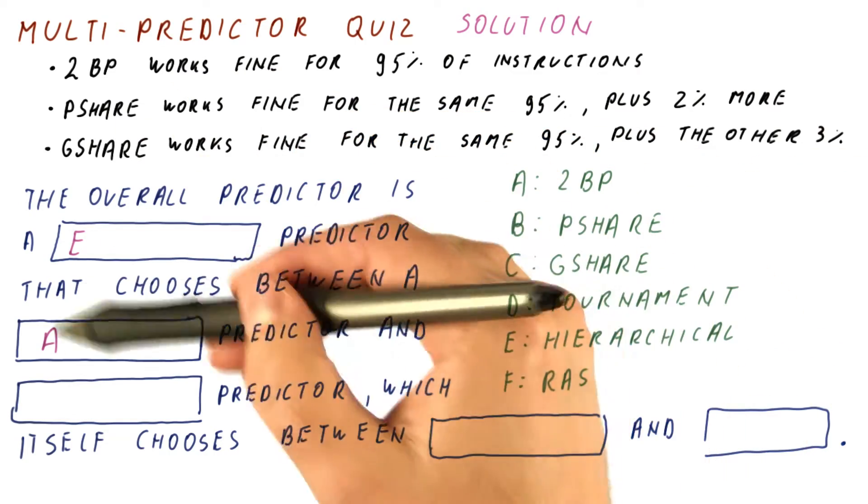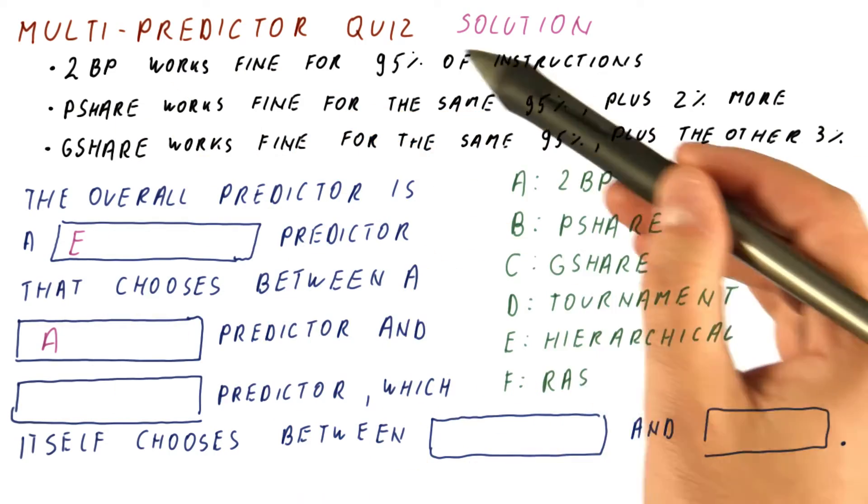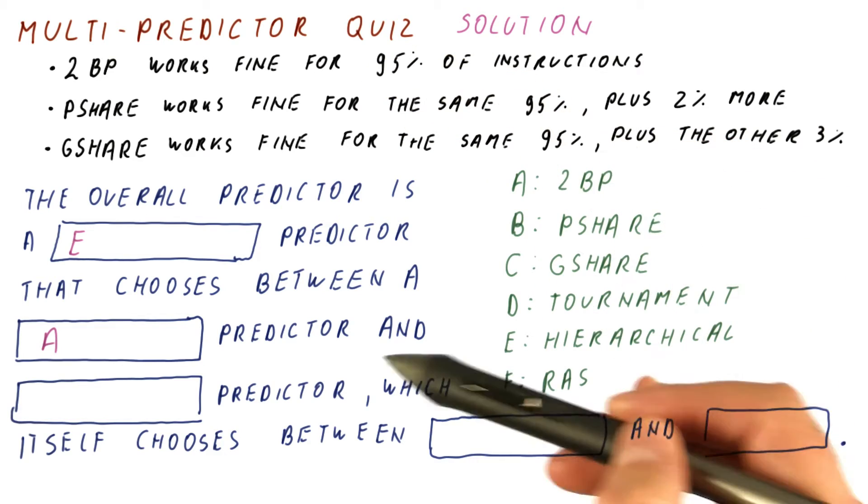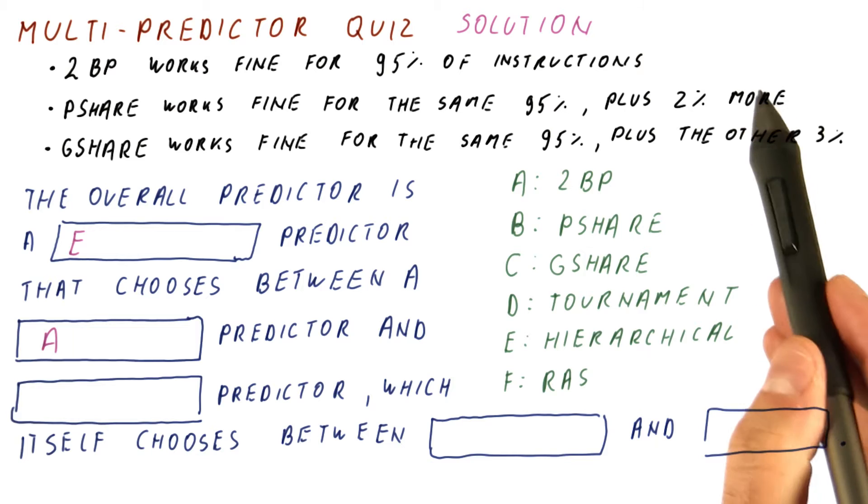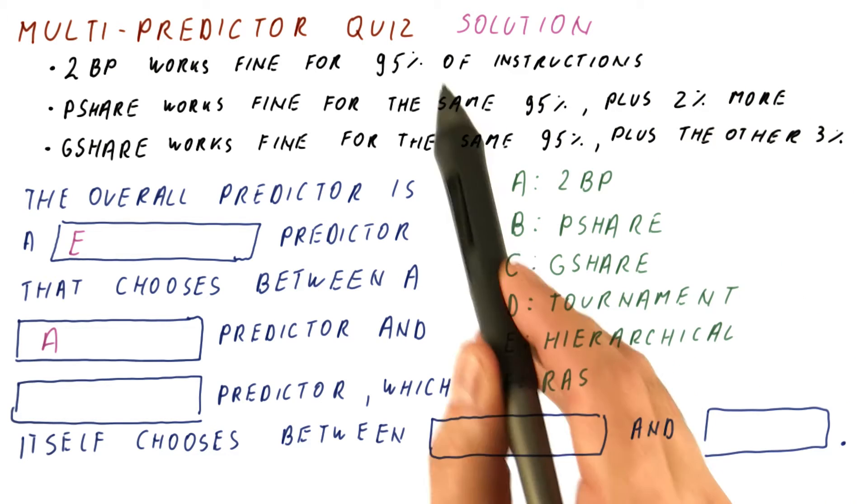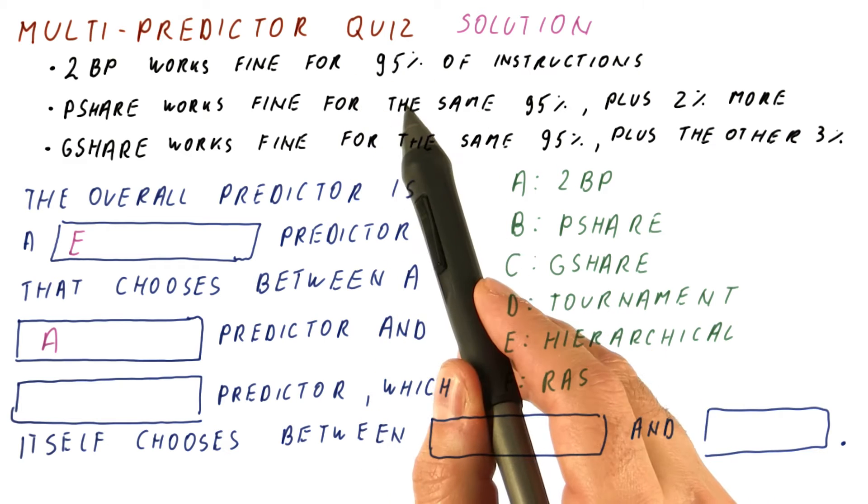What this first part does is it basically makes most of the branches just go to the two-bit predictor so that the space in the more expensive predictor here will be reserved for only the branches that actually need to go there, because the two-bit predictor is not predicting them correctly.